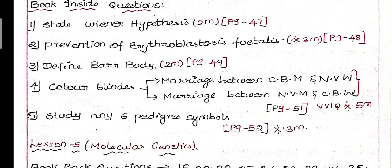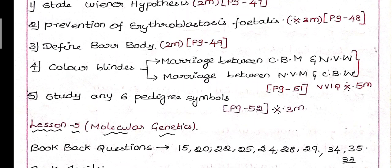Colorblindness has two cases: marriage between colorblind man and normal visioned woman, and marriage between normal visioned man and colorblind woman. For both cases, it's a 3-mark or 5-mark question. With flowchart and explanation, it's a 5-mark on page 51.